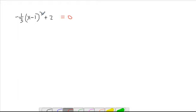Let me zoom in, so this one should be pretty easy. Subtract 2, so that leaves me with negative one-third times x minus 1 squared equals negative 2.